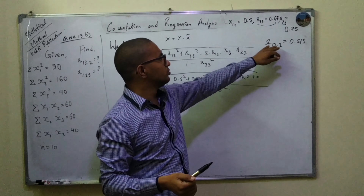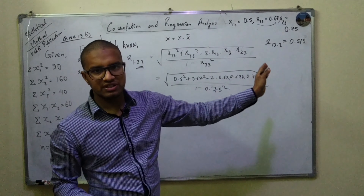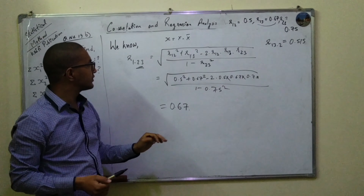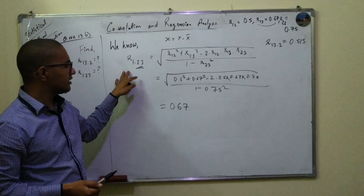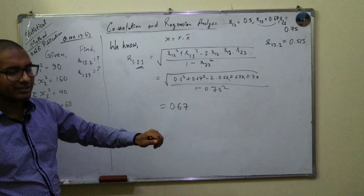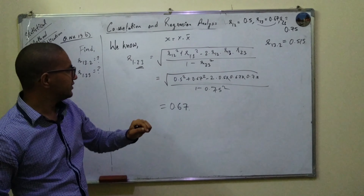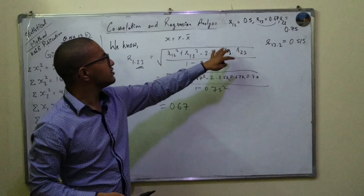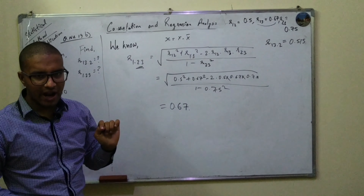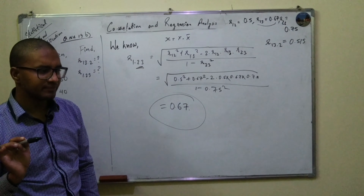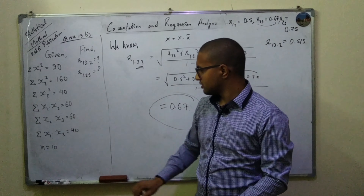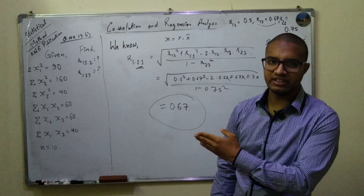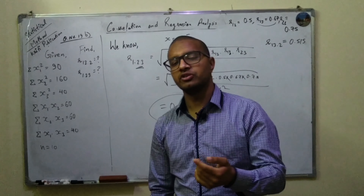That's why we need partial correlation — to isolate the effect of the second variable, which is impacting the correlation between the other variables. They work together. The combined effect of second and third on the first is 0.67, whereas the single correlation between 1 and 2 is only 0.5, and between 1 and 3 is 0.67. When variables 2 and 3 work in tandem, the correlation is 0.67. This is how we solve this kind of problem when deviations from the mean are given instead of raw data.